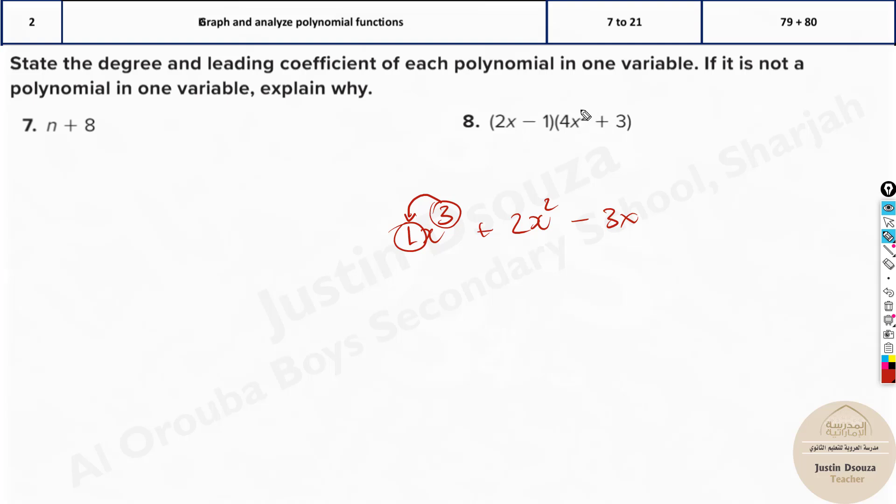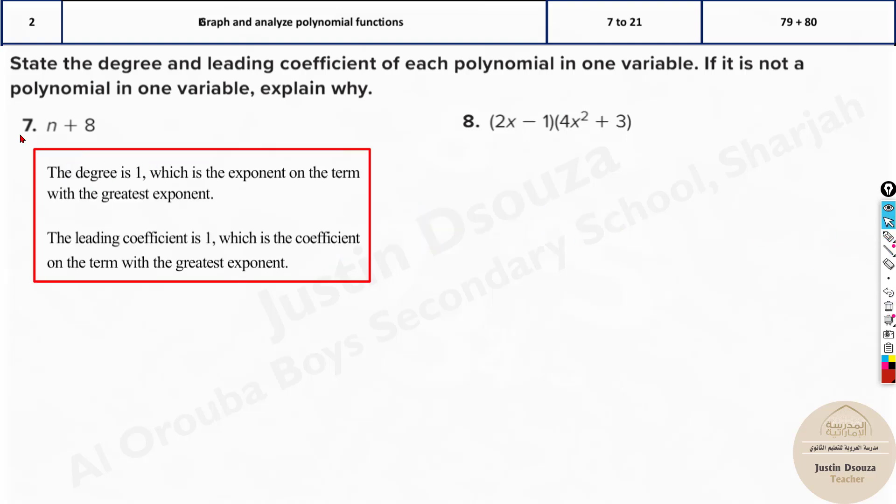Over here, you can see, we will come to it in a minute. Because we have to multiply this and then solve it up. Now imagine you had 4x to the power 4 over here. And then now the leading coefficient would be 4. If it was minus 4, it will be minus 4 and so on. So it's very simple. Now this one over here, the degree is 1 and the leading coefficient is also 1. What about this over here?